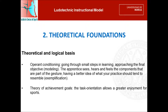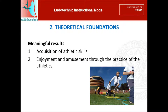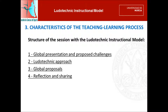Talking about the theoretical foundations, we have two theoretical and logical bases. First, operant conditioning: children learn across small steps, and the apprentice sees, hears, and feels the components that are part of their learning. Second, the theory of achievement goals: task orientation allows greater enjoyment for sports. On the other hand, we find meaningful results: acquisition of athletic skills, enjoyment and amusement through the practice of athletics.